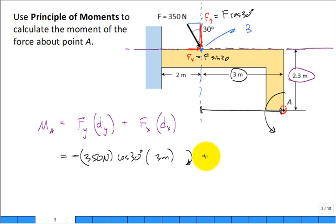All right. And then we'll continue. So Fx is my 350 newton force times the sine of 30 degrees times that moment arm distance of 2.3 meters. And which way does that want to make it rotate? In the clockwise direction, so let's leave this as clockwise and leave this as a positive in front of it.